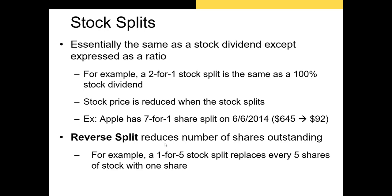We can also have what's called a reverse split, where a firm takes five shares and combines them into one. If you own 100 shares and there's a 1-for-5 reverse split, you now own 20 shares each worth five times as much. If you don't have at least five shares — say you only have three — the firm will literally just buy back your shares and give you cash for those residual shares.